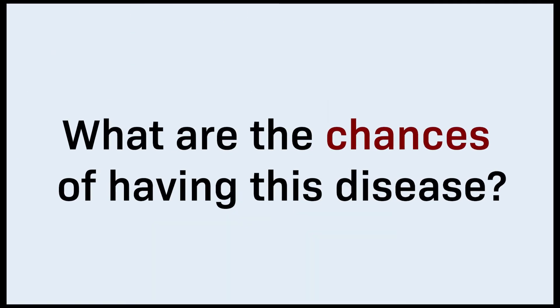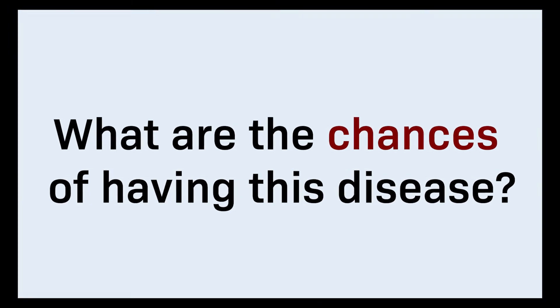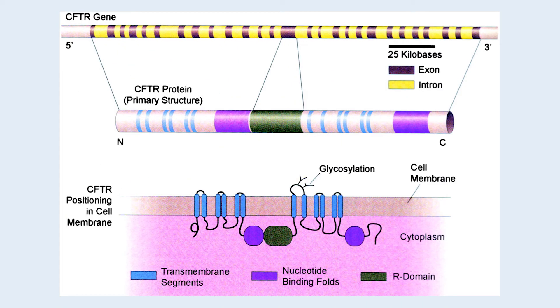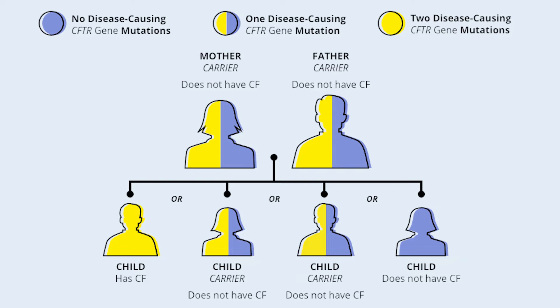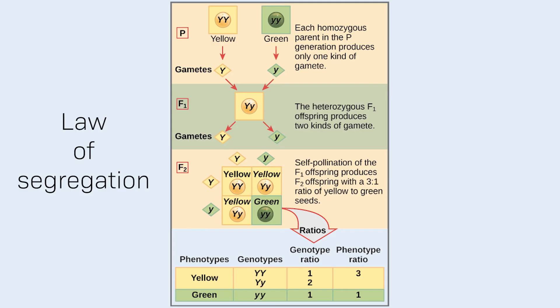So what are the chances of having this disease? As mentioned before, Cystic Fibrosis is caused by the mutation of the CFTR gene, but since it's a recessive gene, you need two copies of this mutated gene to suffer the disease. If you only have one copy, you are considered a carrier. Two carrier people have a 25% chance of having a child with Cystic Fibrosis, a 50% chance the child will be a carrier, and a 25% chance the child will not receive the mutated gene from either parent. If you took biology in high school, you might have seen this law of segregation of genes when you studied Mendel.